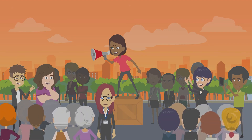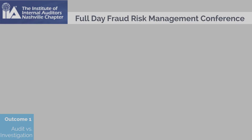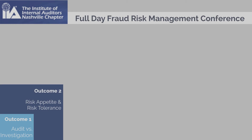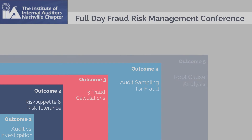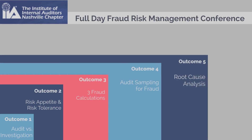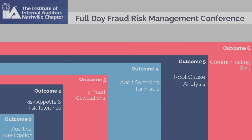Transform how you communicate risk. In one day, you'll learn how to differentiate between audit and fraud investigations in practice. You can deepen your understanding of the relationship between fraud risk appetite and risk tolerance. You'll also learn how to differentiate between the impacts of the three fraud calculations and improve your audit sampling for fraud. You'll understand the value and challenges of systemic root cause analysis and uncover little-known secrets to effective communication for risk.